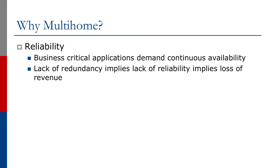Apart from redundancy, we also need to consider reliability. Business-critical applications demand continuous availability. If there's no redundancy, you don't really have much reliability, and that means significant loss of revenue. Most network operators today offer some level of availability — 99-point-something percent is quite common. Back in my early internet days we were offering 99.5% availability, which is only a few hours of downtime per year. Today it's common to see operators offering 99.9%, down to a few minutes per year. If the operator is spending all their revenue refunding customers because they haven't met their availability guarantees, reliability is of critical importance.